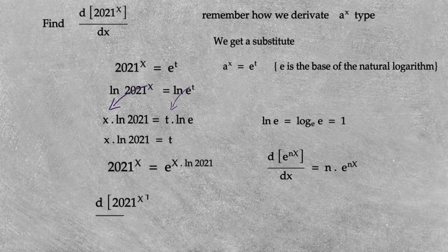So the derivative of 2021 to the x power equals ln(2021) times e to the x·ln(2021) power.